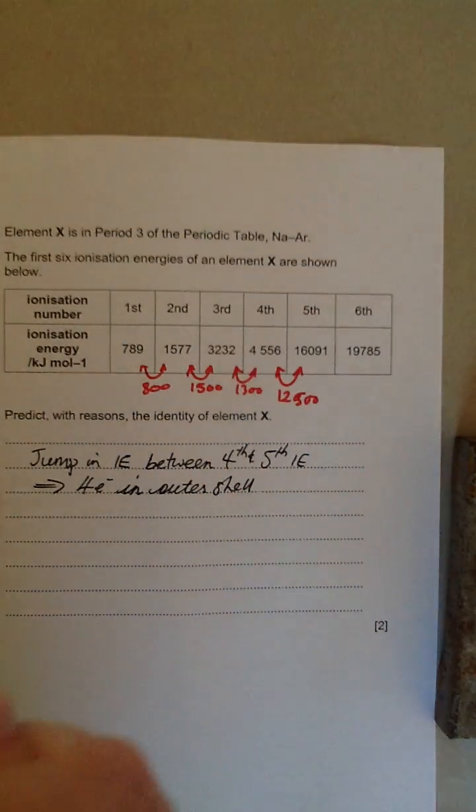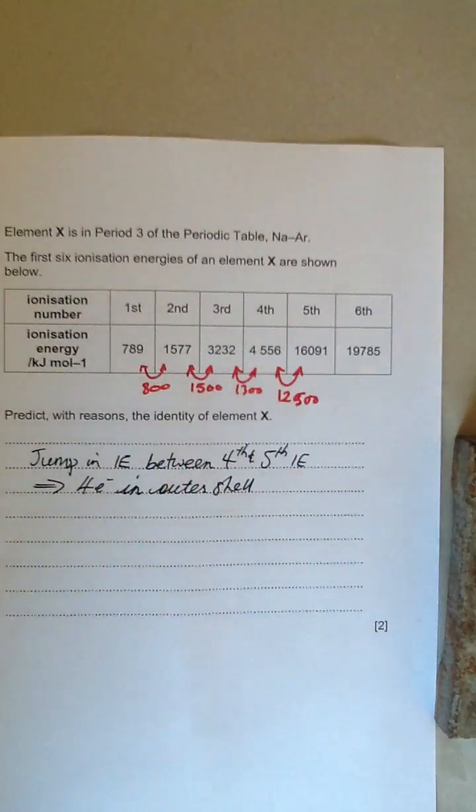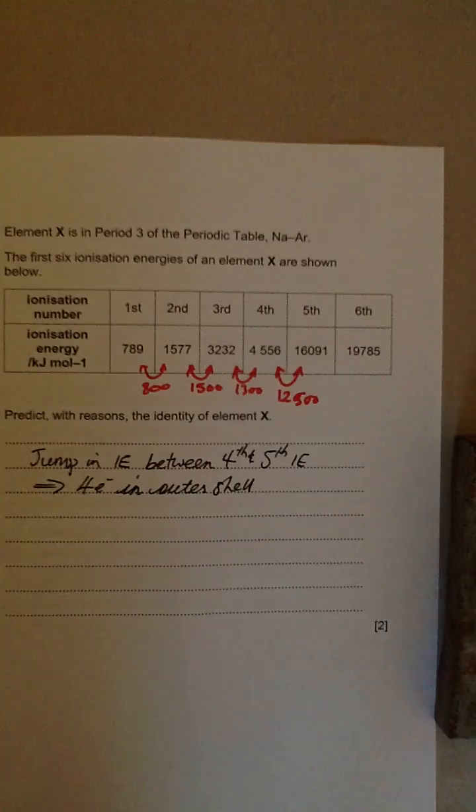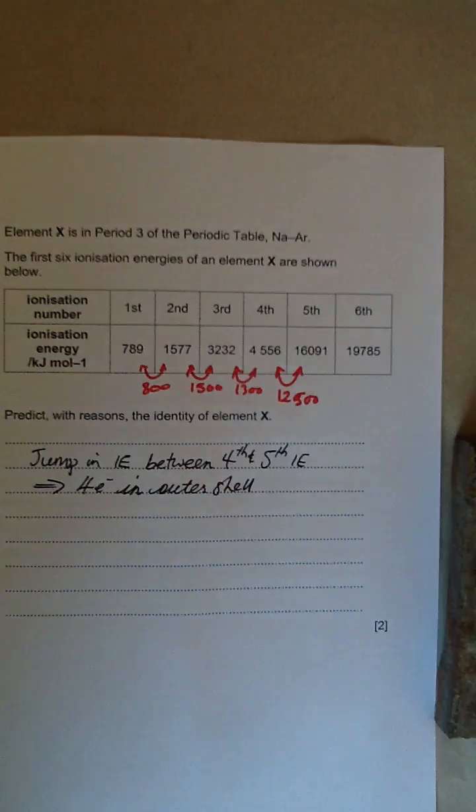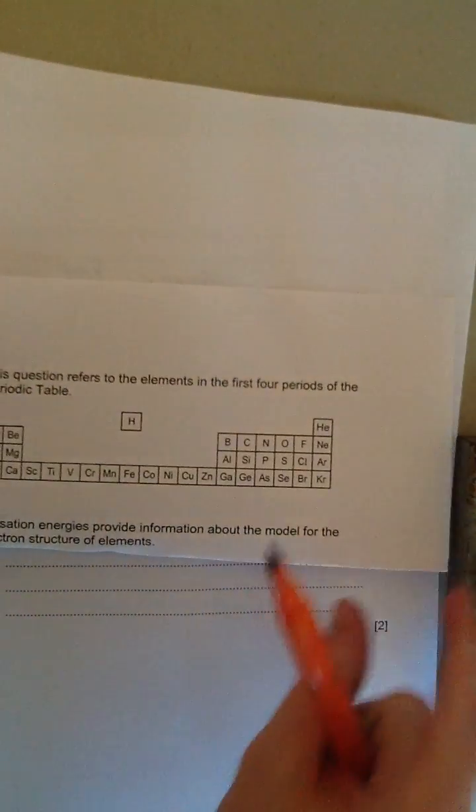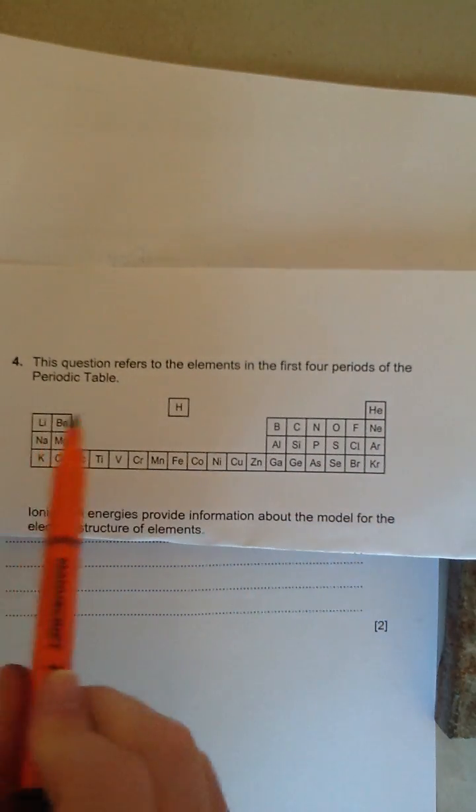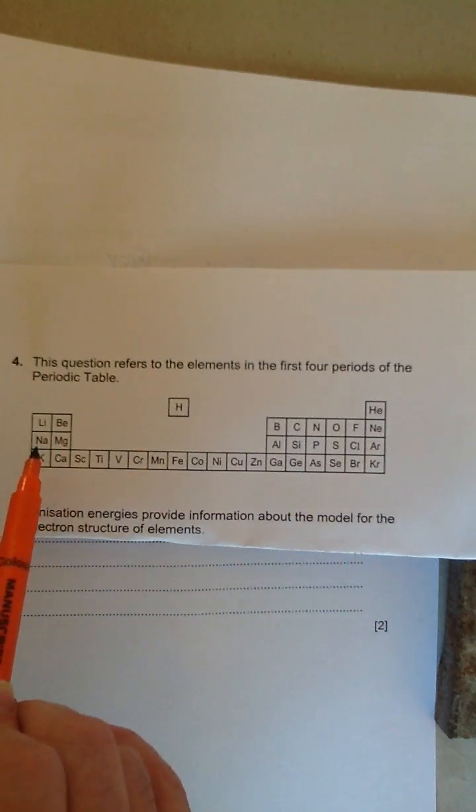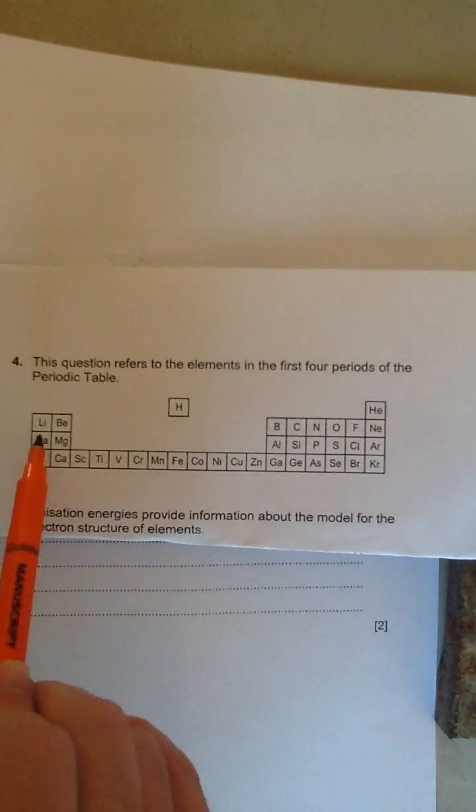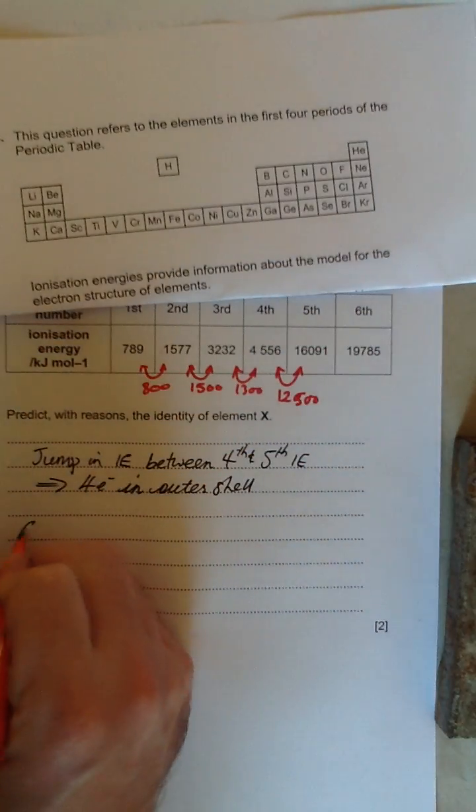The question then asks to predict with reasons the identity of element X. We know it has four electrons in the outer shell, but which element is it? The question says it's in period three. Looking at our periodic table, period three is the row from sodium across to argon. The element in group four is silicon, which means element X is silicon.